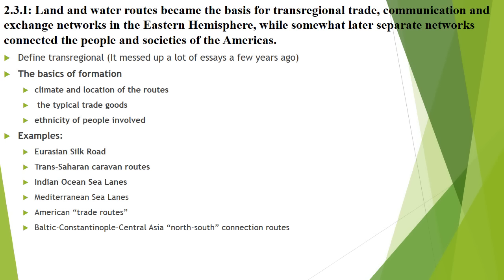AP also expects you to know at least one of the following three: the Mediterranean sea lanes, the American trade routes, and the Baltic-Constantinople-Central Asia north-to-south connection routes. Those three are minor in this time period because the Big Three above really take the broad focus for most students during the course.